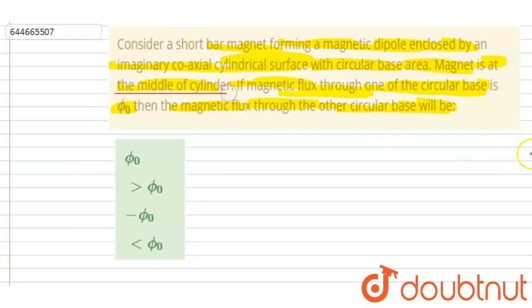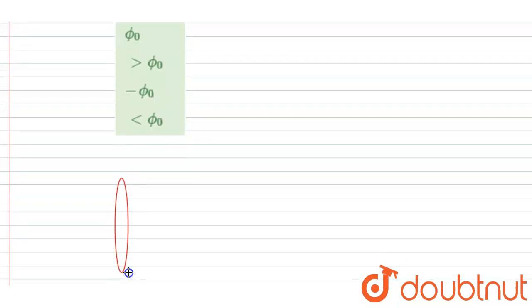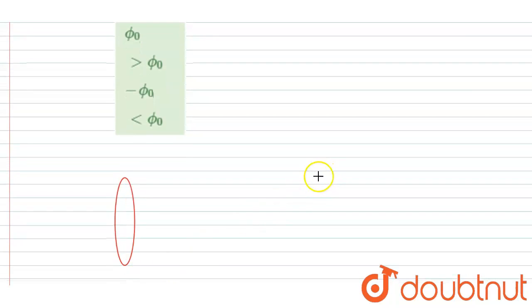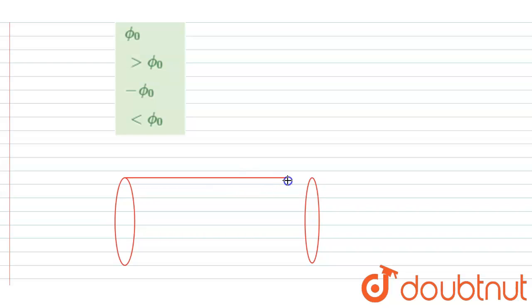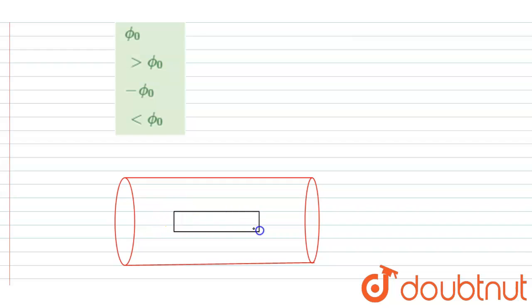So if you see, the magnet is placed at the middle of the cylinder symmetrically. Let me draw the case — this is a cylinder, and in the cylinder, at the middle, a bar magnet is kept, exactly like this.